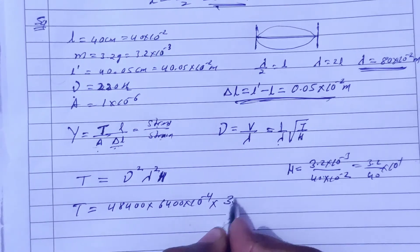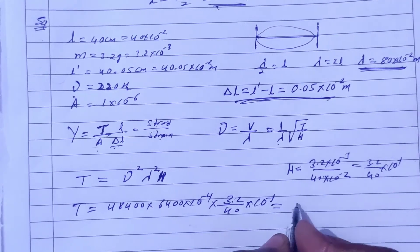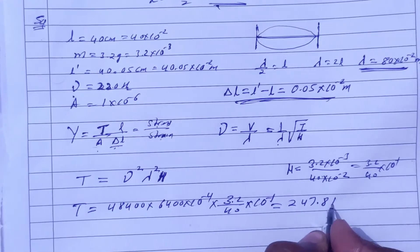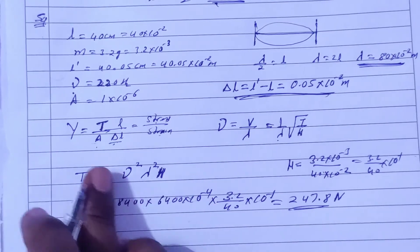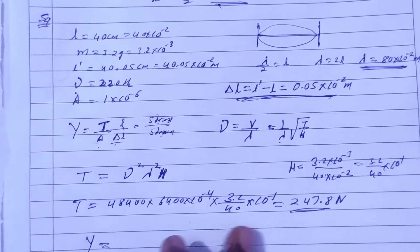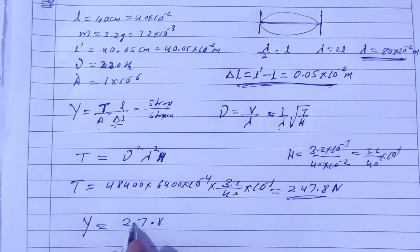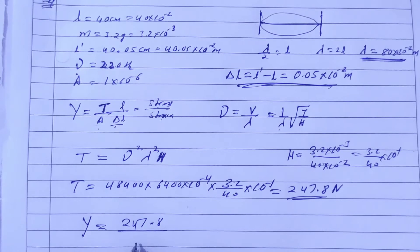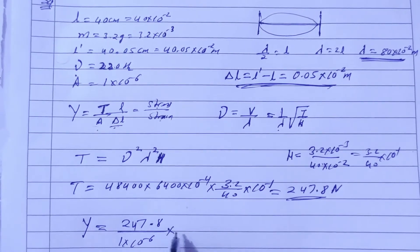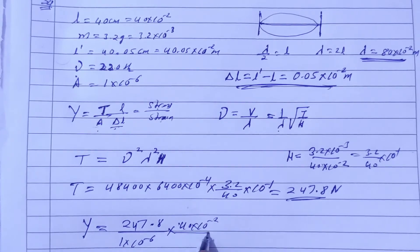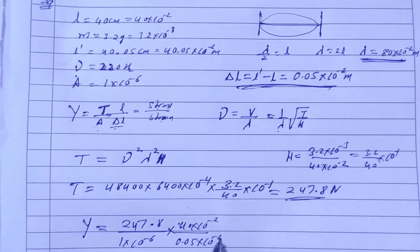Solving this gives tension equal to approximately 247.8 Newtons. Now we can calculate Young's modulus. Y = (T/A) / (ΔL/L) = 247.8 divided by area (1 × 10⁻⁶), multiplied by original length (40 × 10⁻²) divided by change in length (0.05 × 10⁻²).